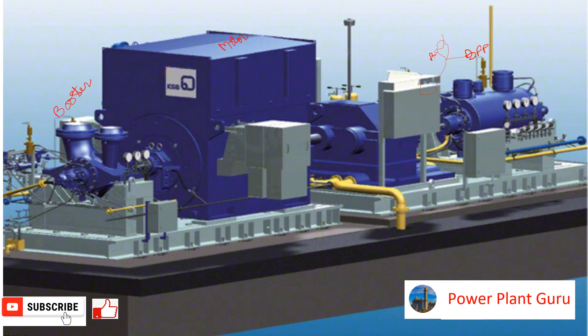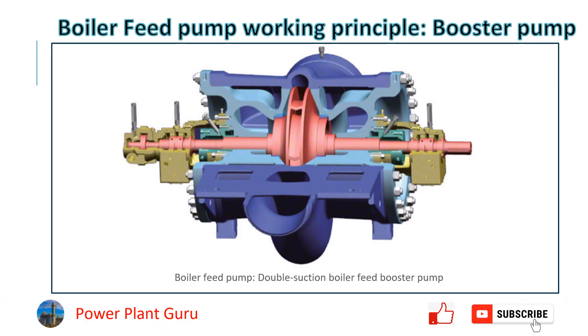If you are generating steam at 105 to 106 bar, then there has to be a little higher pressure at the discharge of the BFP so that water can travel from the BFP to the boiler economizer or the steam drum. At the boiler feed pump you will have around 10 to 15 kg extra pressure so that, accounting for all losses, water from the BFP can reach the economizer and steam drum.